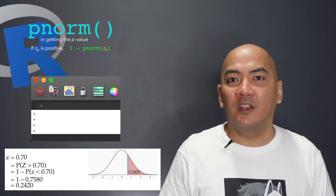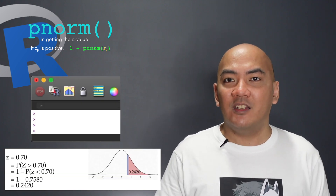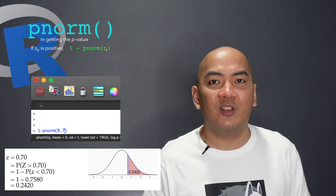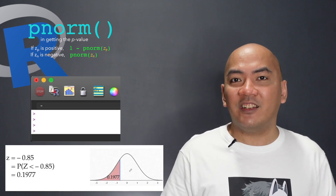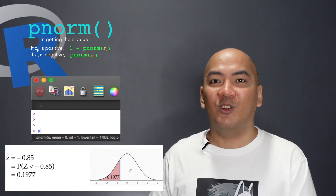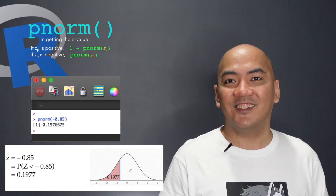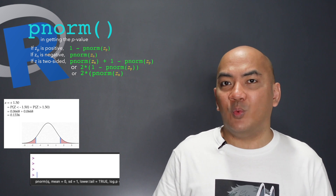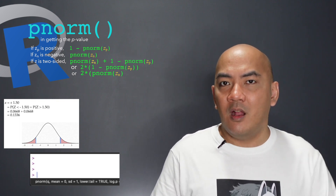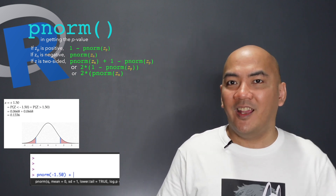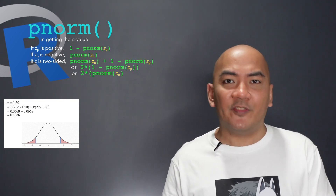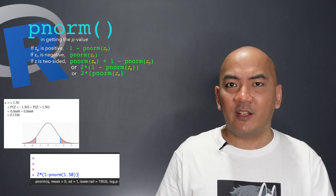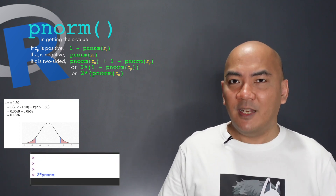In finding the P-value, it's very similar. If the value of Z is positive, meaning the area to the extreme is on the right, use 1 - pnorm(Z). If Z is negative, its area to the extreme is on the left, so use pnorm(Z). When it is two-sided, just add the two probabilities, or simply multiply by 2 either the P-value when Z is positive or when Z is negative.